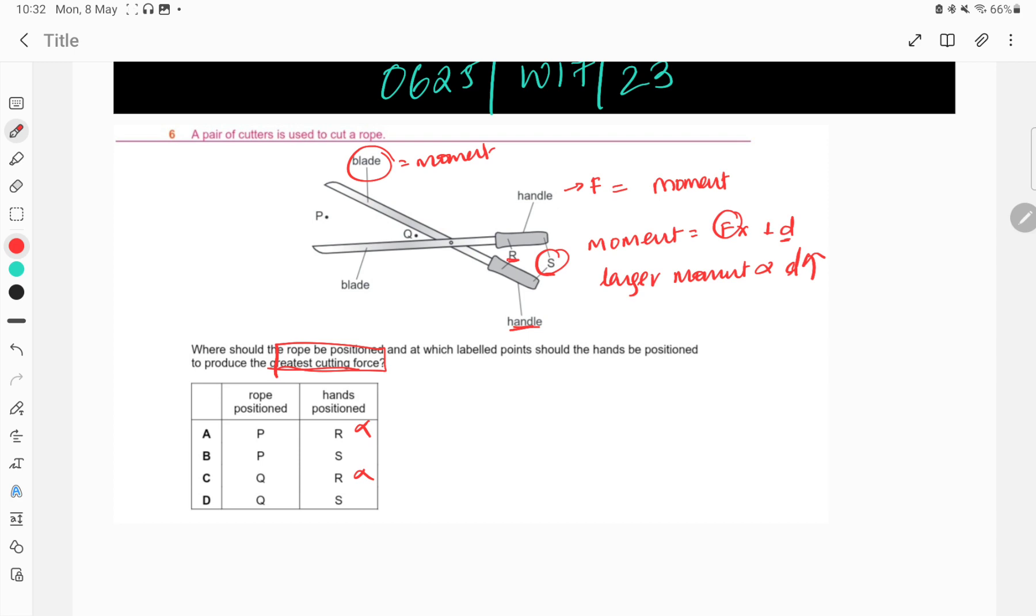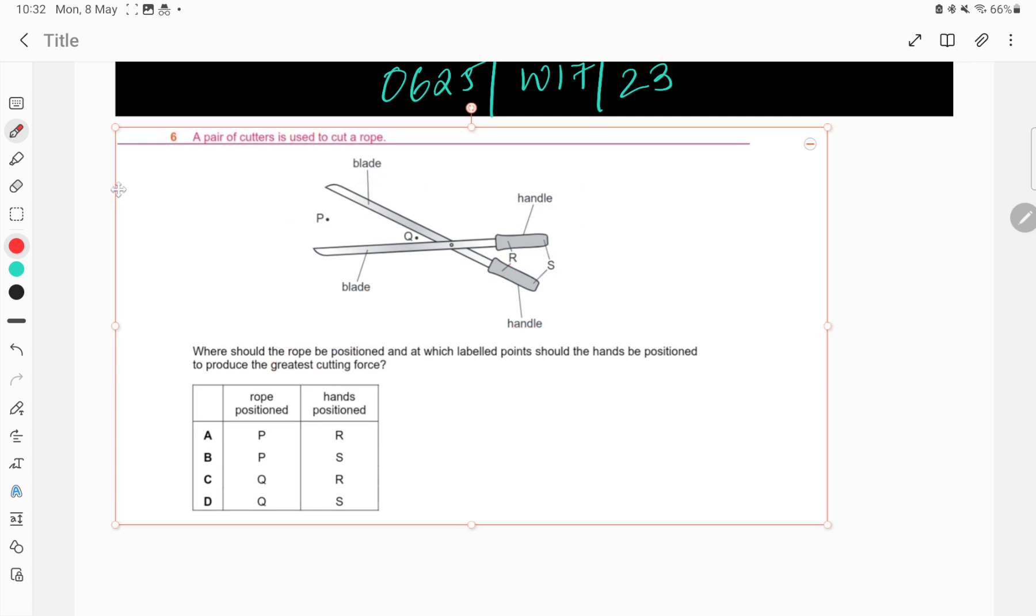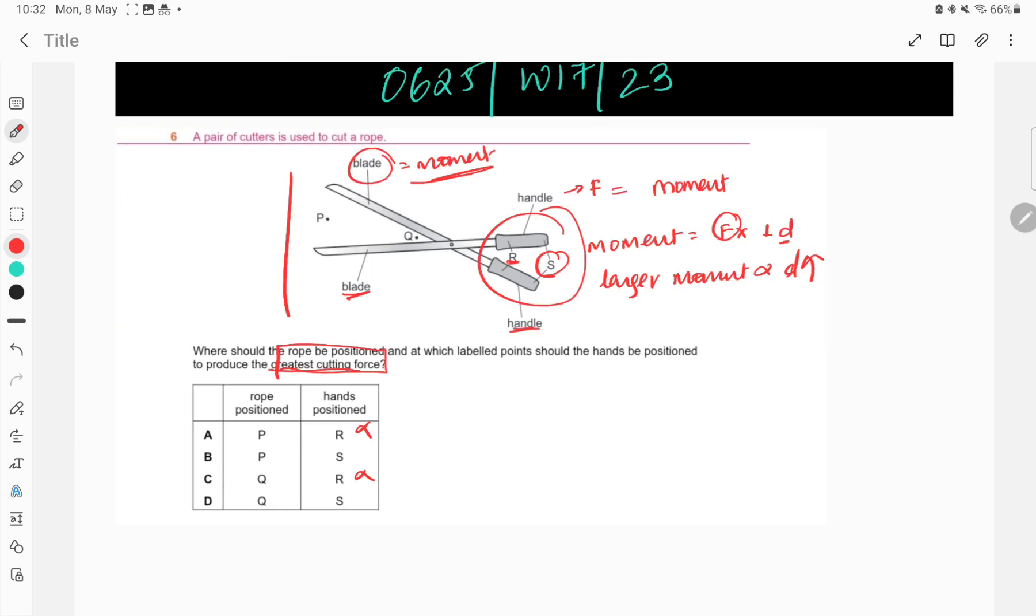I am only left with option B and E. Now, once you have exerted the force, the same moment is reproduced at the blades. So, at the output or blades, again my formula for moment is force into perpendicular distance. Now, this moment is the same as that of the input moment or the moment at the handle, which means now my only variables are F and D.